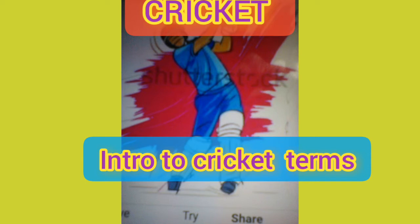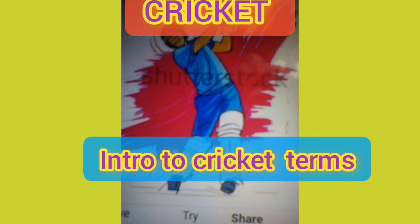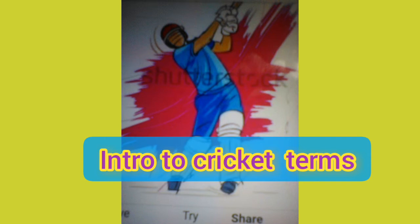Professional cricket matches are fixed duration games. These matches are called test matches. They go on for six hours every day for five days together. Since the matches need adequate natural light, the playtime is mostly set between 11 a.m. to 6:00 p.m. The ruling of the umpire is final.